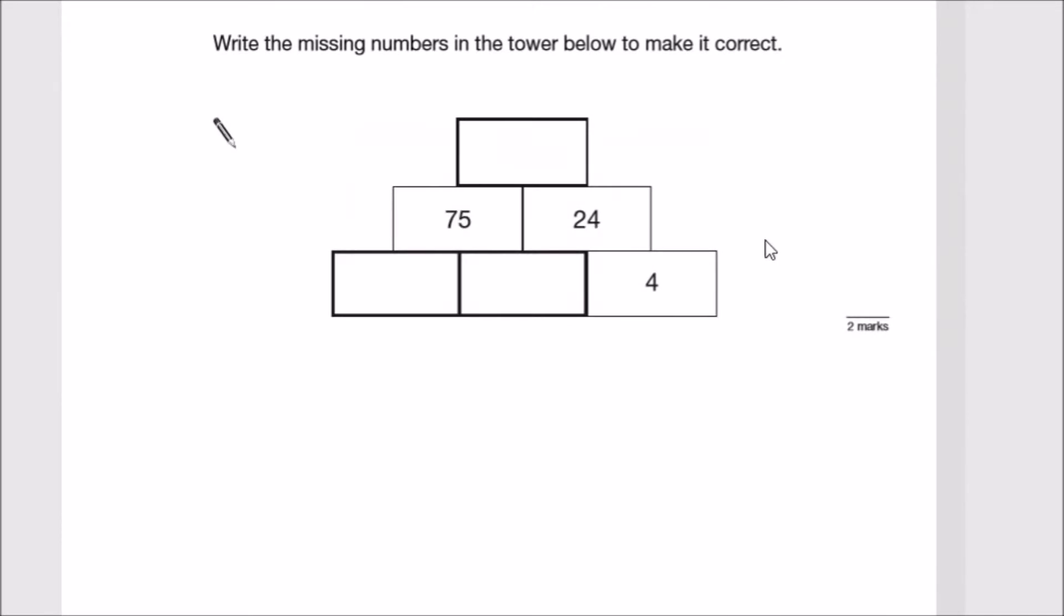Let's do the same here. We've got 75 and 24. Let's multiply them together. 75 times 24: I'll do 75 times 20 first. 75 times 2 is 150, add a 0 gives 1500. Then 75 times 4, which is 150 doubled, gives 300. Adding this up gives 1800.